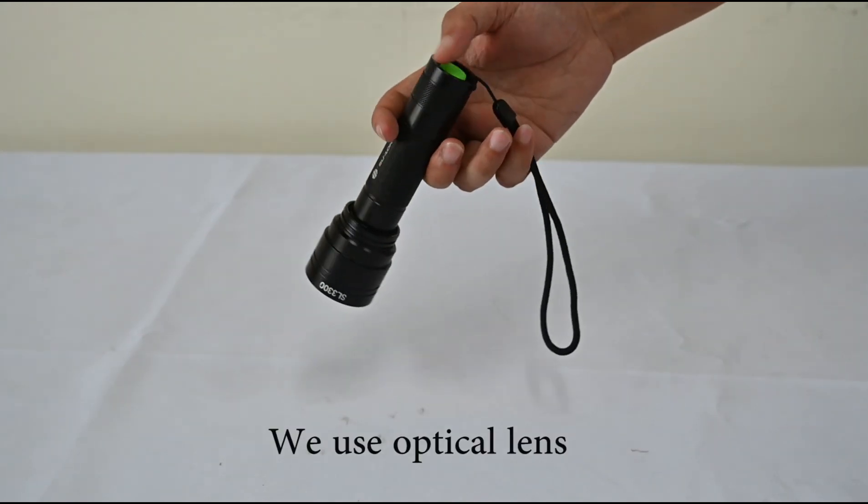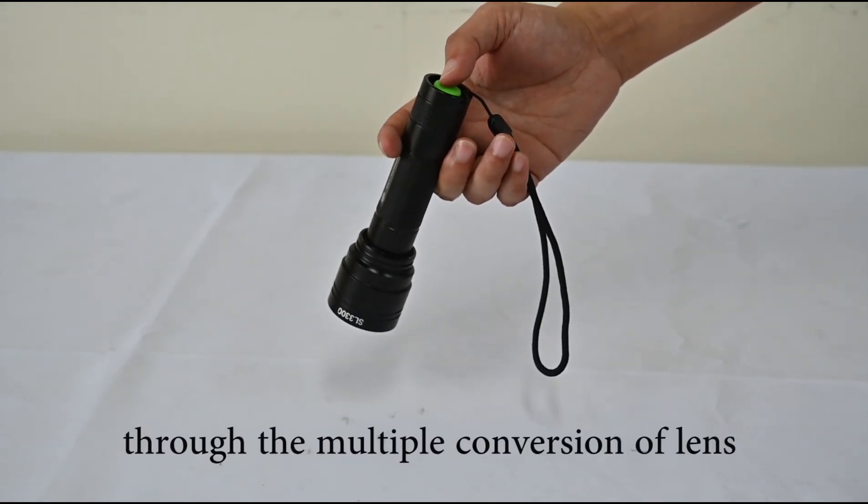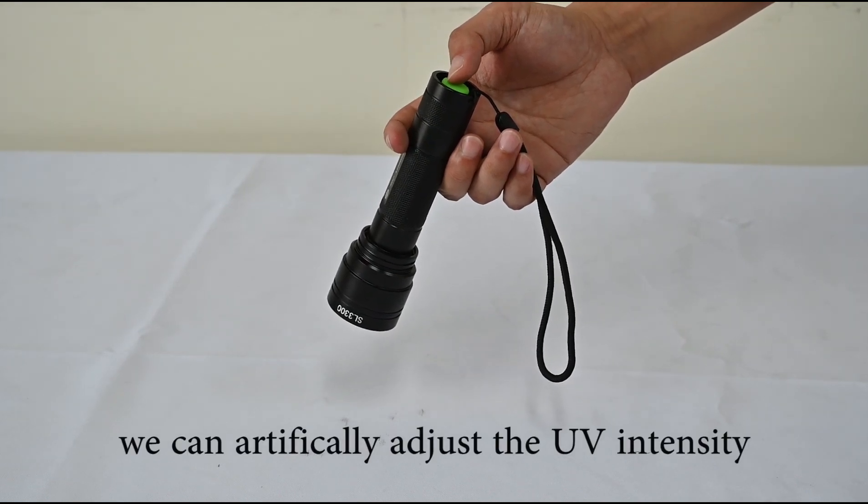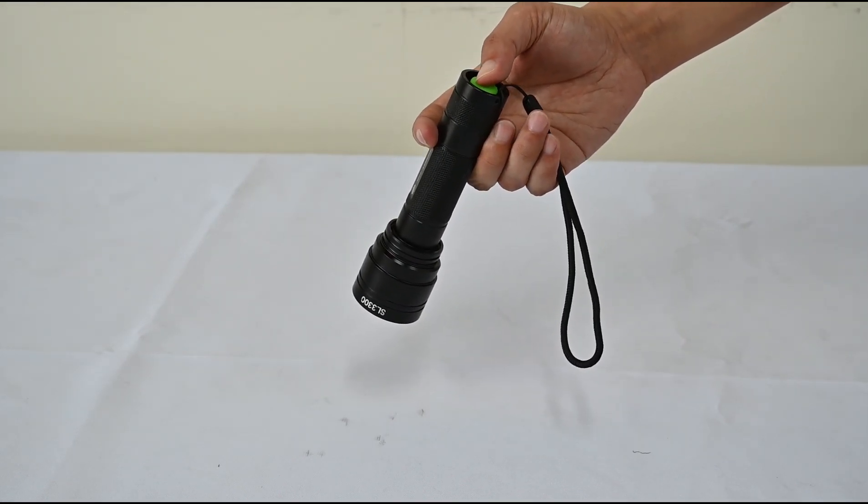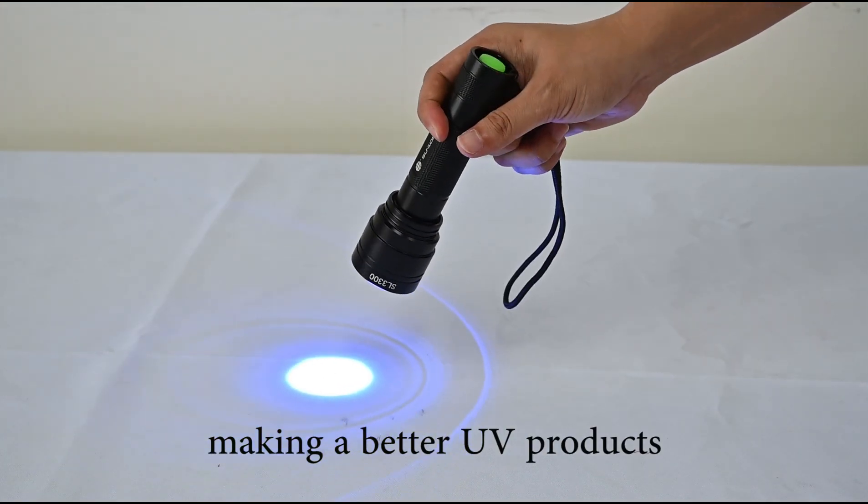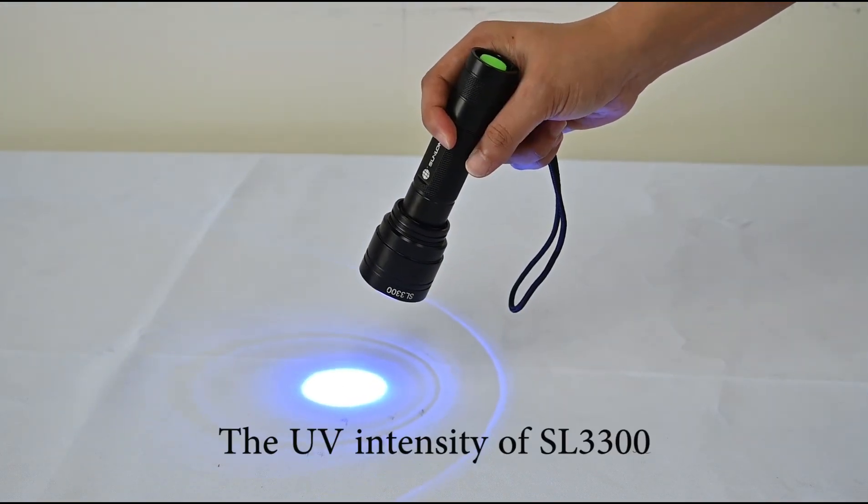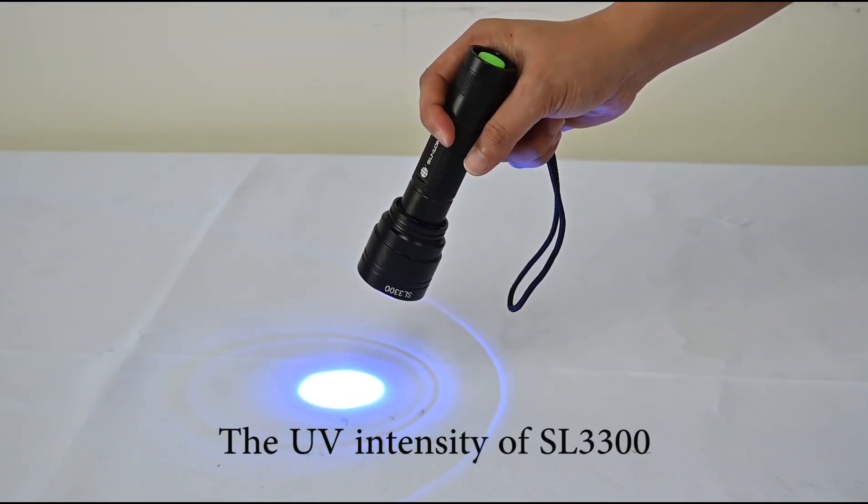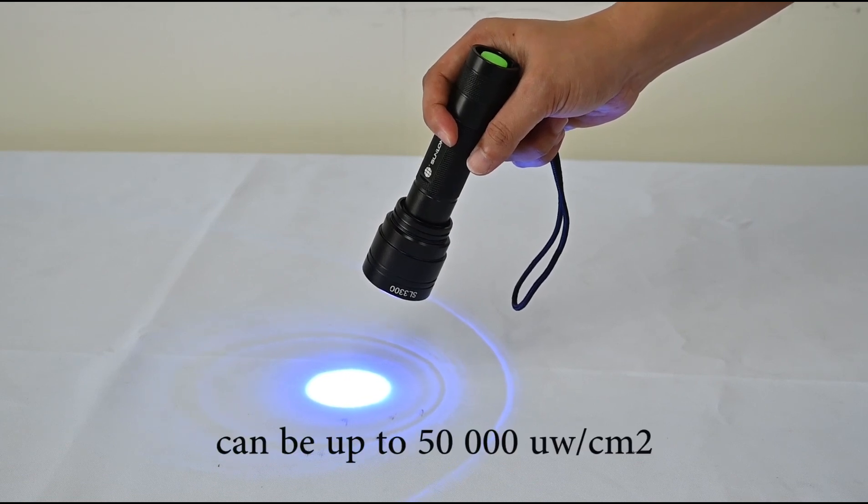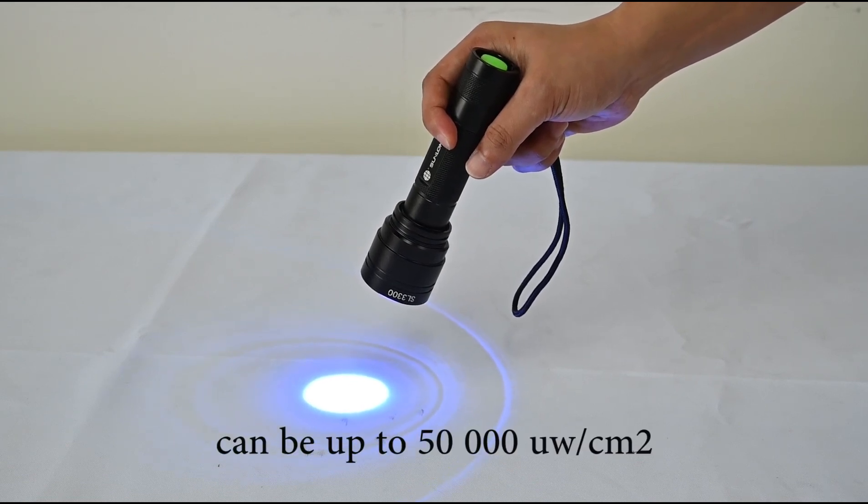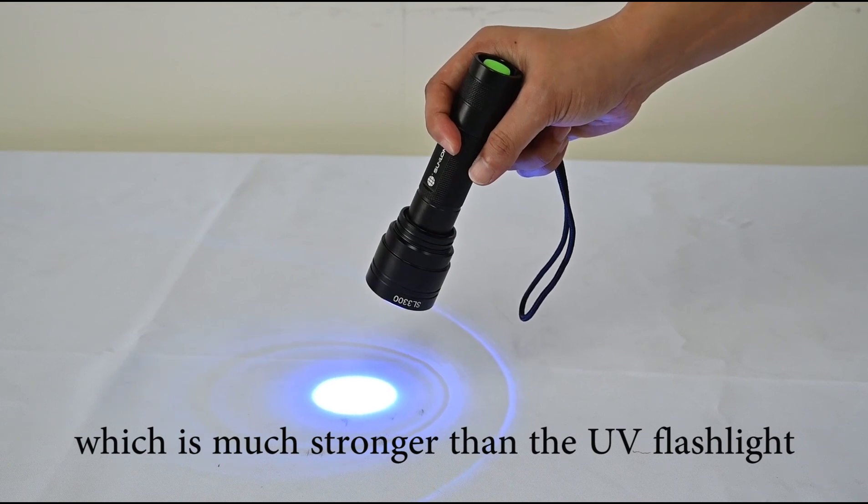We use optical lens through multiple convections of the lens, we can artificially adjust the UV intensity, making a better UV product. The UV intensity of SL3600 could be up to 50,000 mW per square centimeter, which is much stronger than UV flashlights from other competitors.